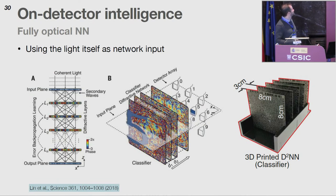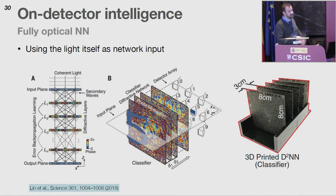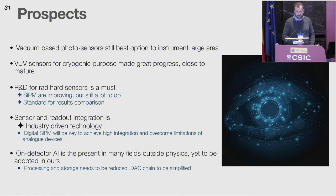Another level of going closer to the sensor: using directly the light before any reconstruction by implementing a diffractive neural network — training optical layers to perform the right interferences at each layer to extract the pattern from the inputs, then 3D printing these optical layers. You could think of a digital SiPM array linearly graded for energy and position, giving a camera that directly returns high-level information.